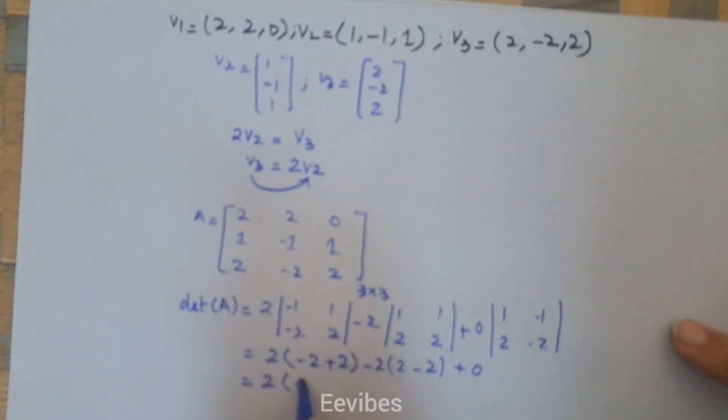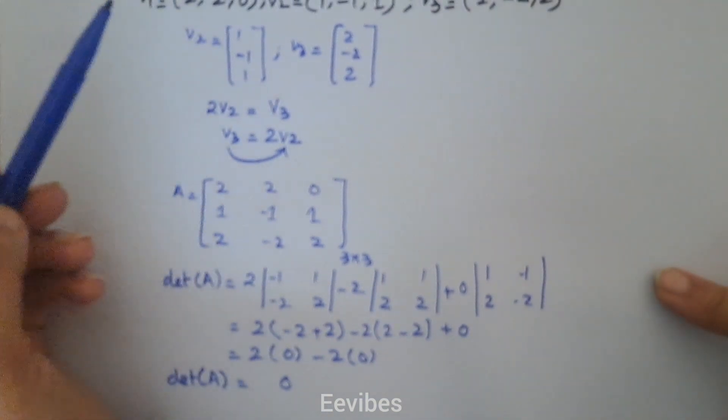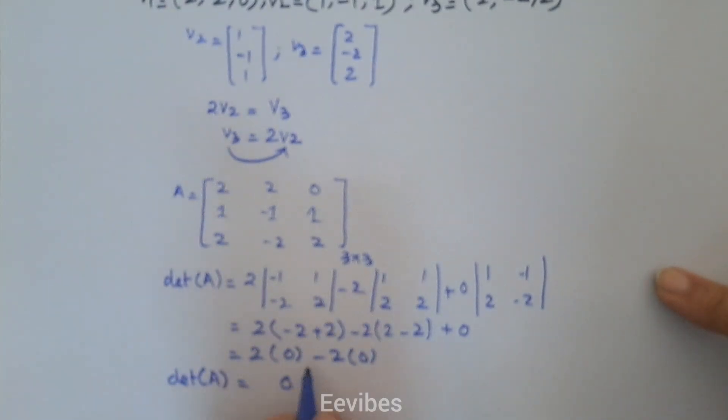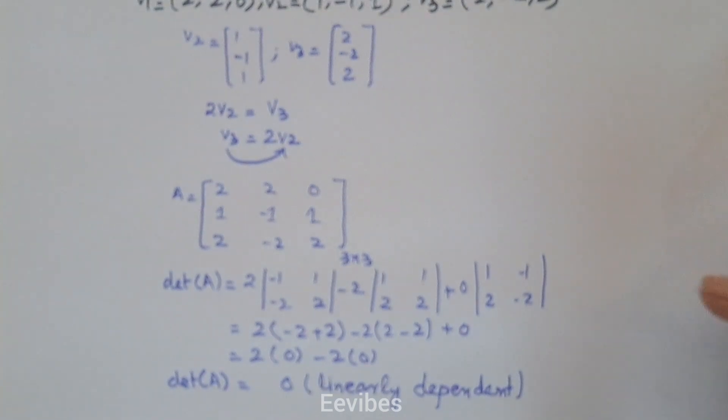So 2 times 0 minus 2 times 0—you can see the determinant comes out to be 0. What does this mean? Whenever the determinant of the matrix formed by a set of vectors equals 0, the vectors will always be linearly dependent. You don't need to verify it using the linear combination equation. This is the quickest way to check if a given set of vectors are linearly dependent or independent.